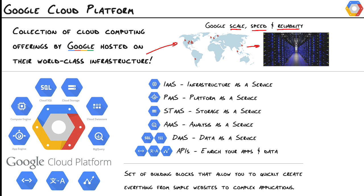So here's what Google's Cloud consists of. We get Compute Engine, which is their infrastructure as a service — a direct competitor to Amazon's EC2. It's just virtual machines in the cloud. You build your networks up in the cloud. Google manages the hardware, and you manage the software.